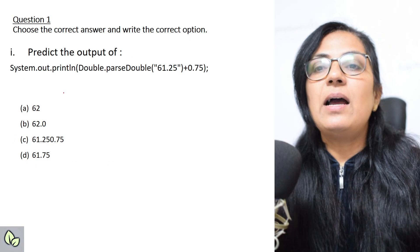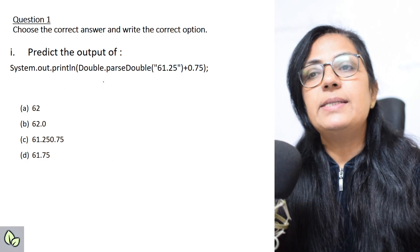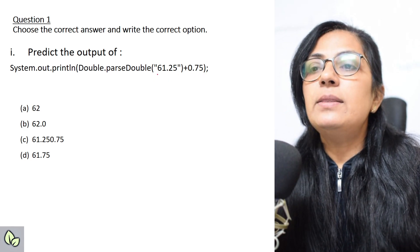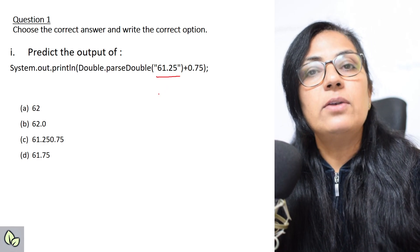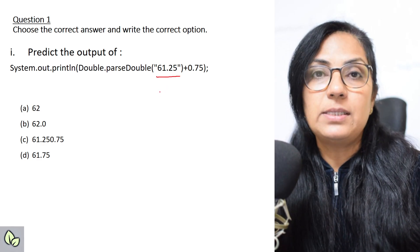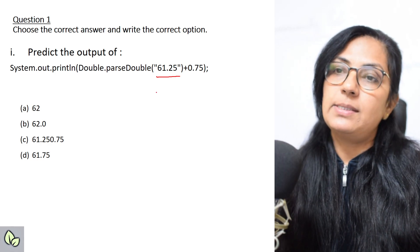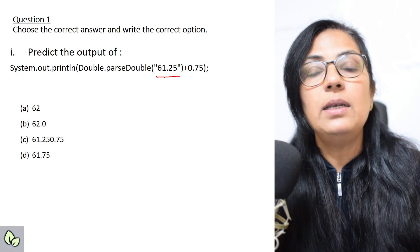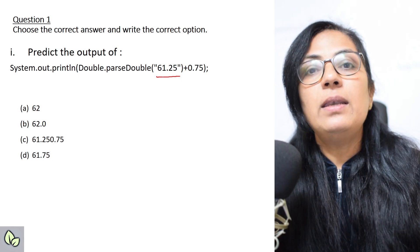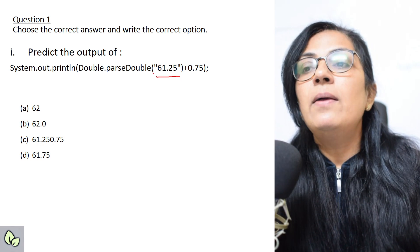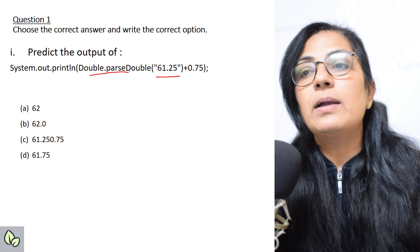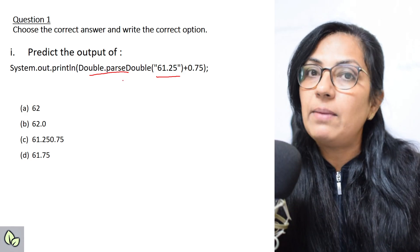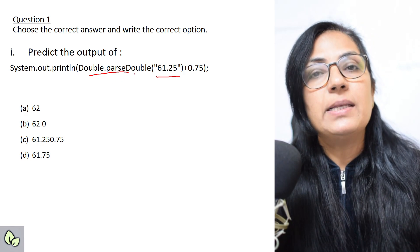We move on to the first question: predict the output of System.out.println(Double.parseDouble("61.25") + 0.75). This 61.25 is written within double quotes, which means it is a string. Any constant written within double quotes is a string. Double.parseDouble() converts a numeric string into its double primitive data type.